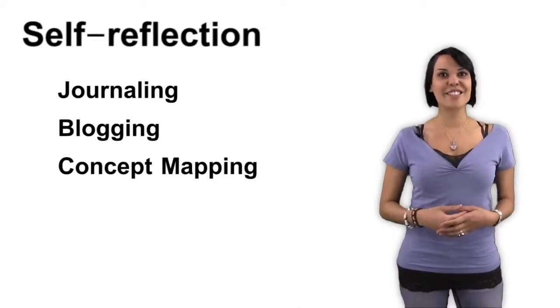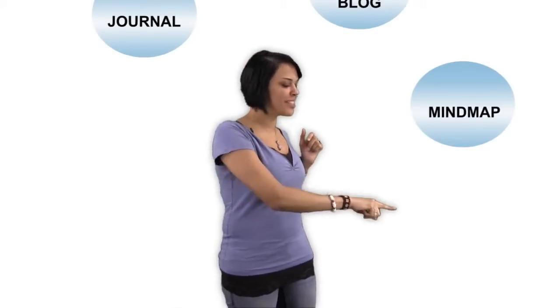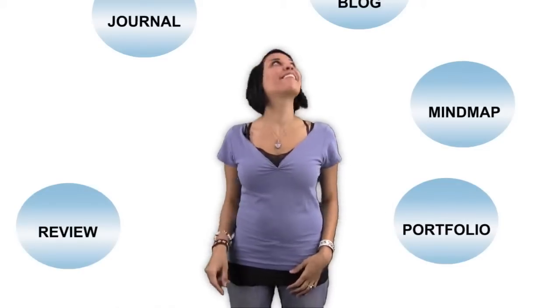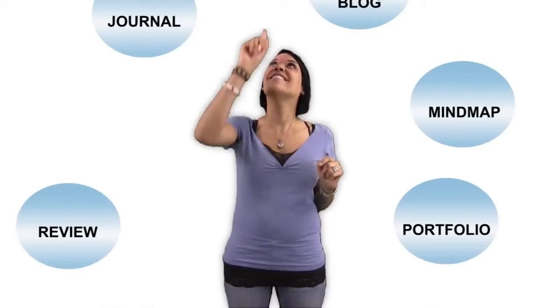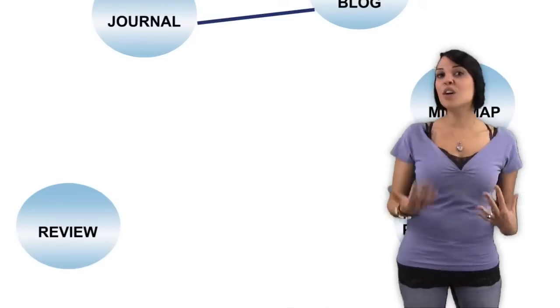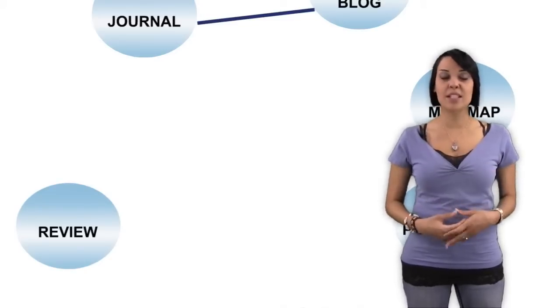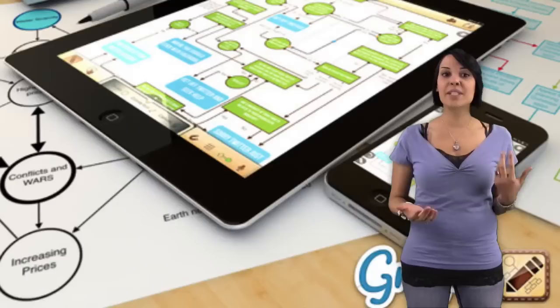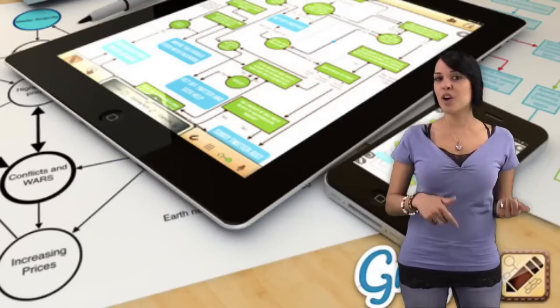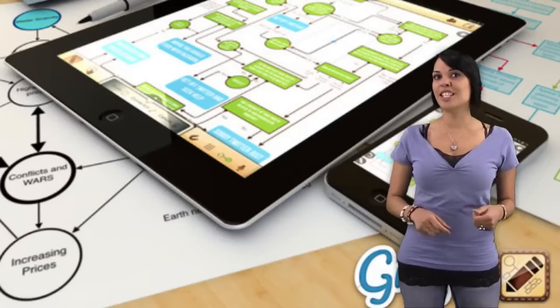Concept mapping, or mind mapping, is a great way to organize your thoughts. Concept mapping can be as simple as drawing bubble ideas on paper and connecting the associative bubbles. You can also use some fantastic software such as MindManager or apps like Graphio to create maps that help you organize projects, essays, and presentations.